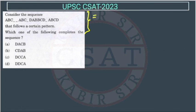So how many letters are there? 1, 2, 3, 4, 5, 6, 7, 8, 9, 10, 11, 12, 13, 14, 15, 16, 17, 18, 19, 20. So there are 20 letters including space.